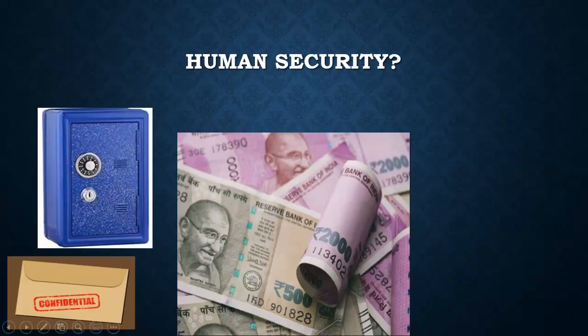Human security means people are storing their documents and money in a locker. People are storing their money and confidential files in a locker and they want security for this — or they want security for their home. So this is human security, the first type of security we want in our life.